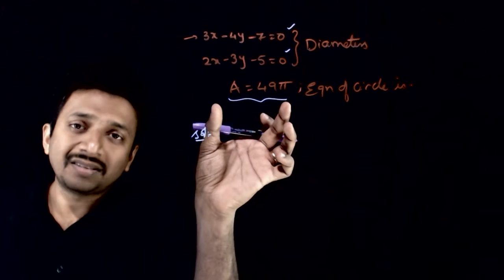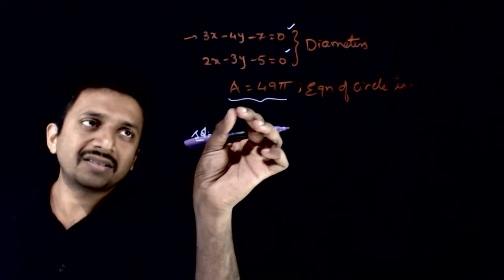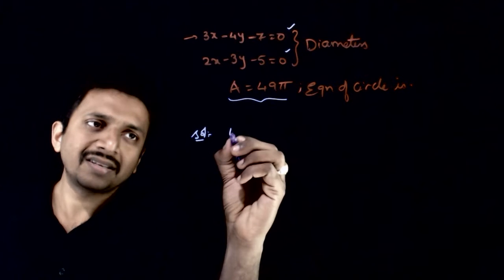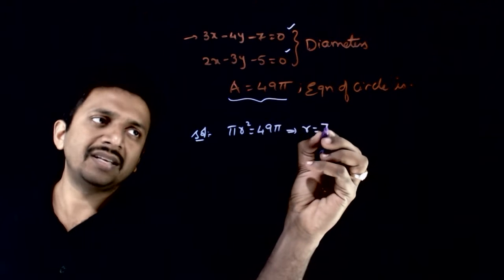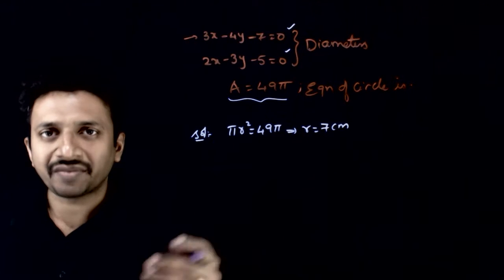As we have this information, we know that the area of the circle is πr² and it is given as 49π. That means r is equal to 7 centimeters or 7 units. The radius can be found out from this information.